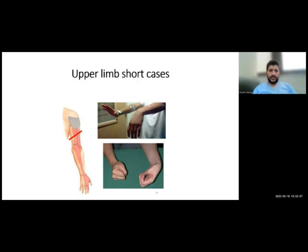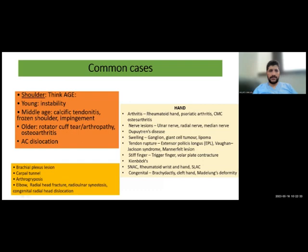Today I will talk about upper limb. Most upper limb cases are short cases, while long cases usually involve the hip, spine, knee, or shoulder. But most upper limb cases are short cases. These are the common cases which you can face in the postgraduate orthopedic exam.